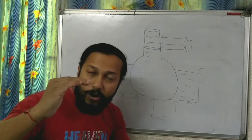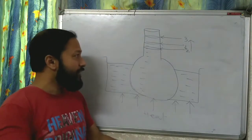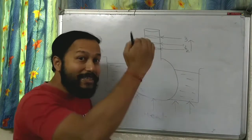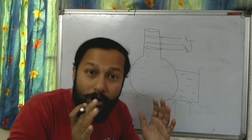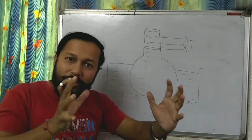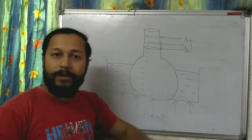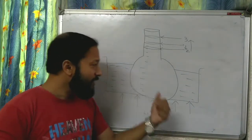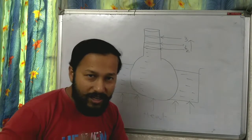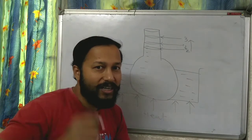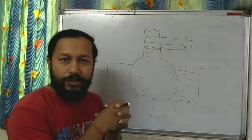So first the level comes down because the flask, which is made up of solid, has its volume expanding. Then the level gets up because the liquid inside the flask is also expanding.